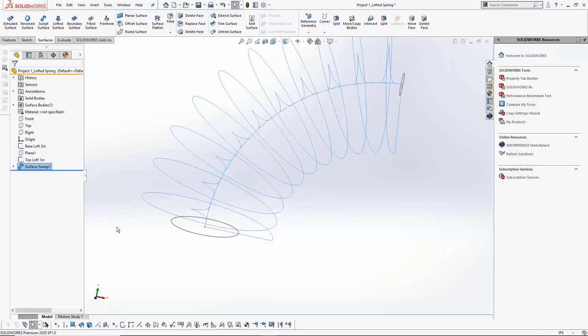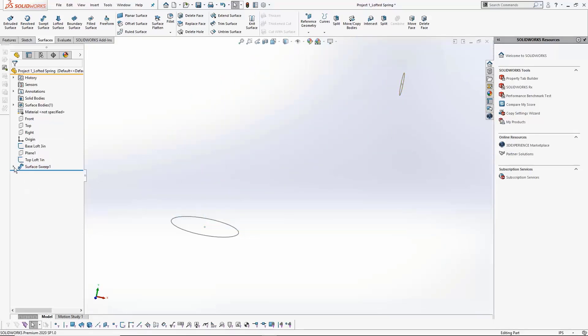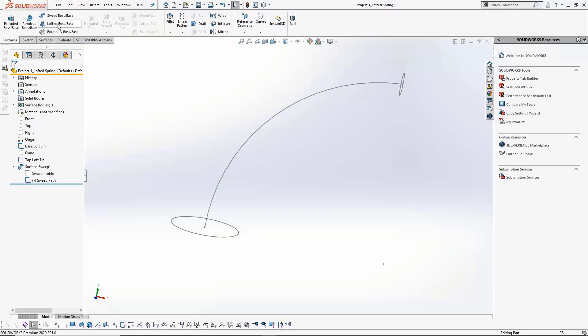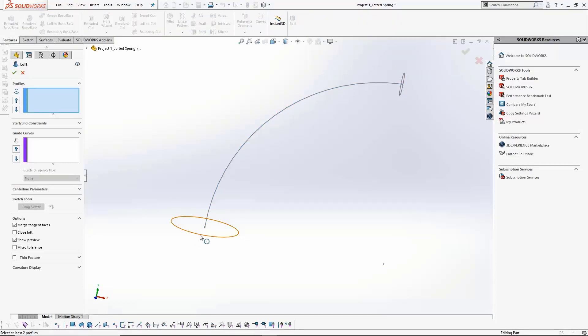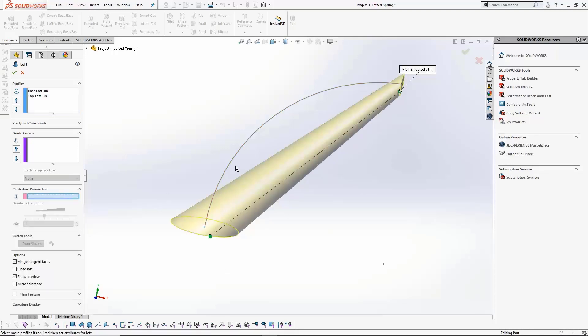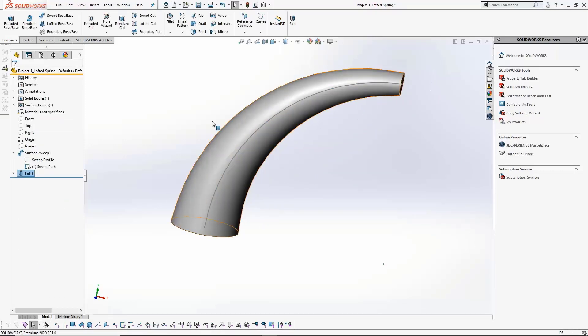This extruded surface only completes the first part of our spring profile, the curvature. However, our spring needs to be lofted for the current design. To complete this loft, we'll need another surface that will intersect the previously created surface. We'll achieve this with a simple loft extrude using the remaining two sketches.